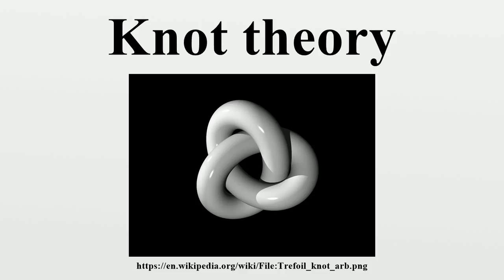There are actually two trefoil knots — the left-handed and right-handed trefoils — which are mirror images of each other. These are not equivalent to each other, meaning they are not amphichiral. This was shown by Max Dehn before the invention of knot polynomials, using group-theoretical methods. The Alexander-Conway polynomial of each kind of trefoil will be the same, as can be seen by going through the computation with the mirror image. The Jones polynomial can in fact distinguish between the left- and right-handed trefoil knots.